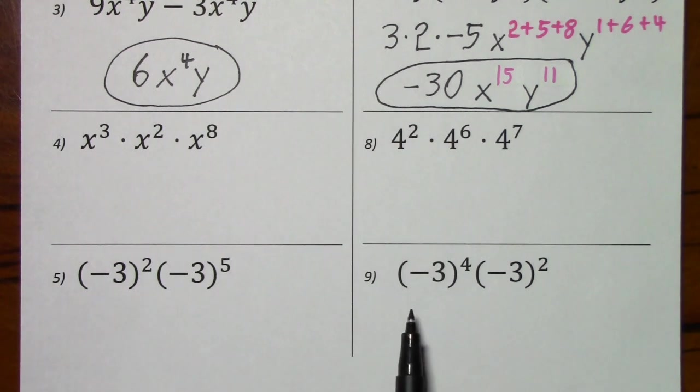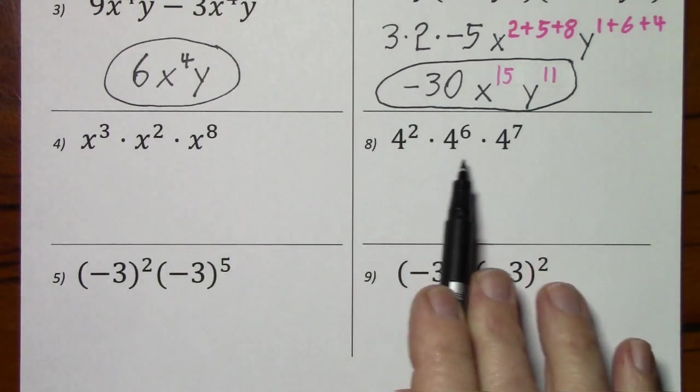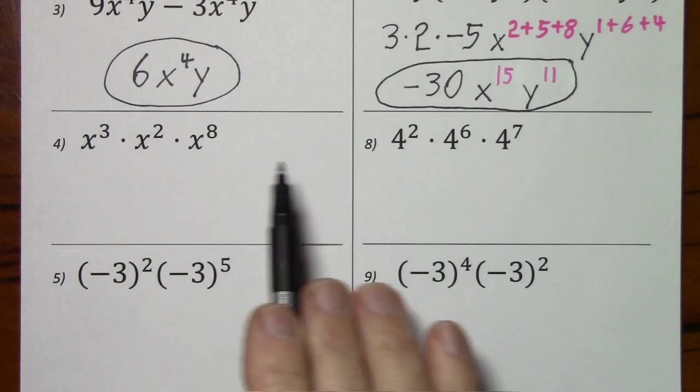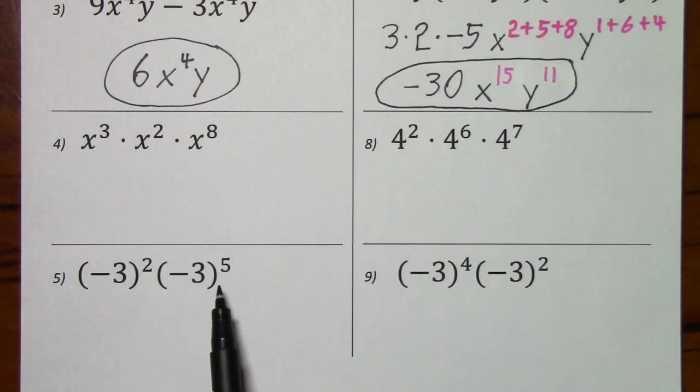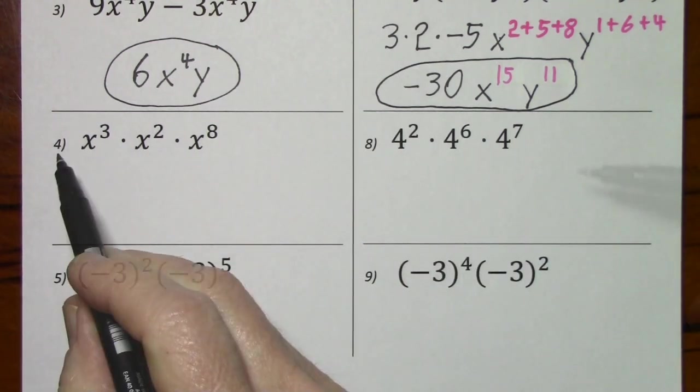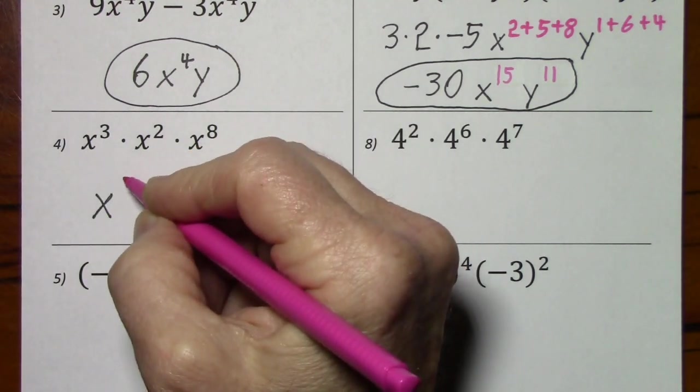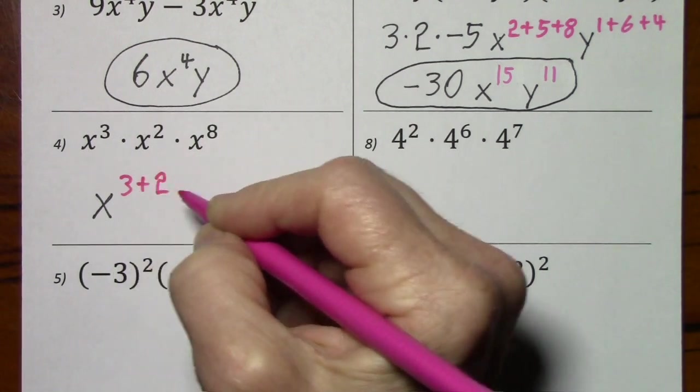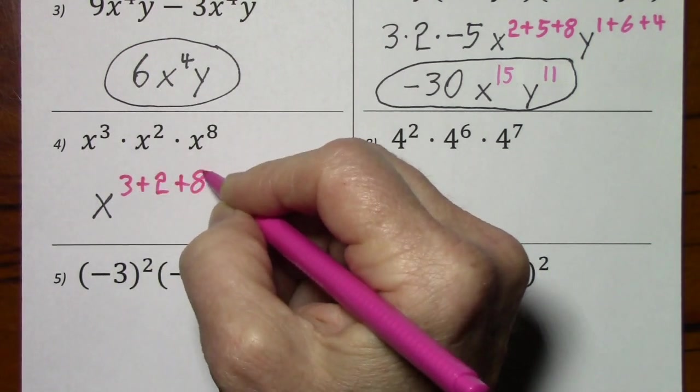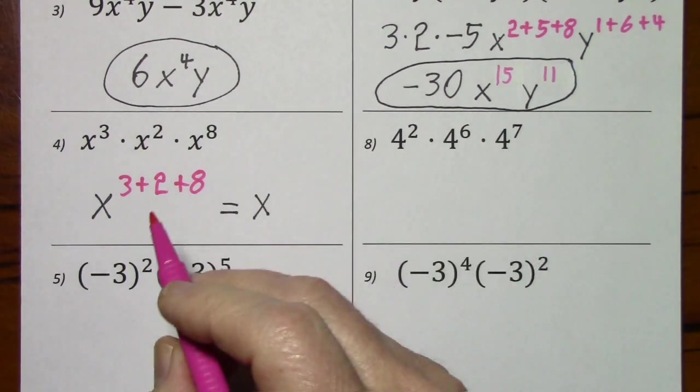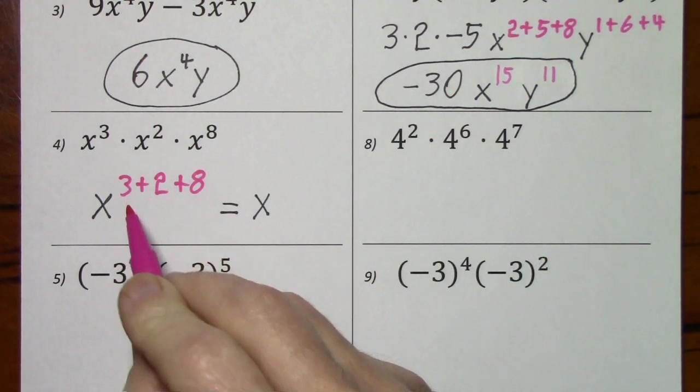These last four problems are quite similar. We're multiplying like bases, so all we do is add the exponents and we keep the bases. So for number 4, this is x to the 3 plus 2 plus 8, which yields x to the 13.